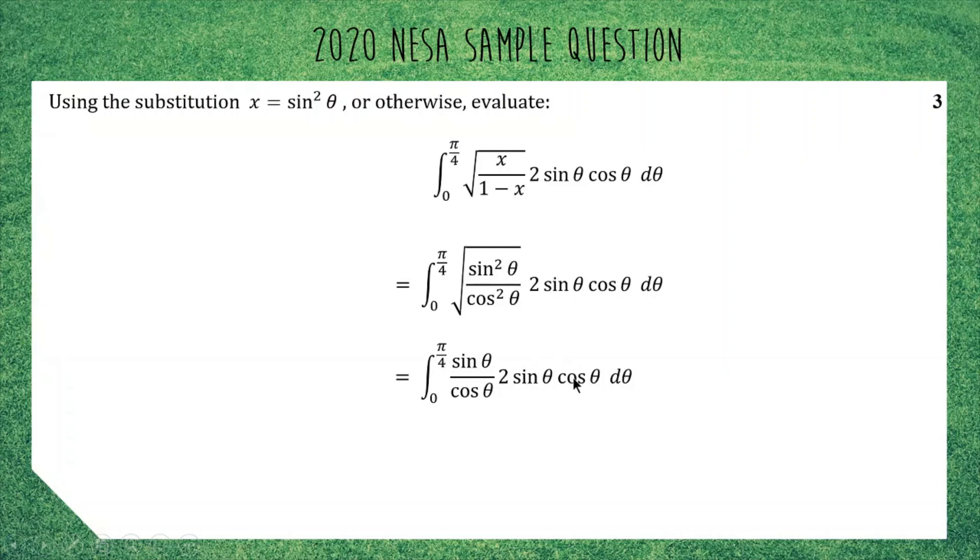Okay? We have cos theta and we have divided by cos theta. So these two vanish. Okay? We can put the 2 at the front of the integral. And sine multiplied by sine is, of course, sine squared. Okay? So after all this work, we now have to get to this point. And to answer this question, like I said, it's pretty tough.